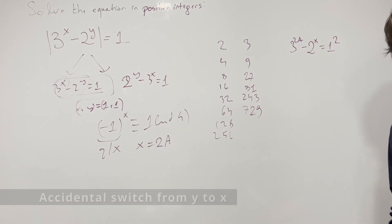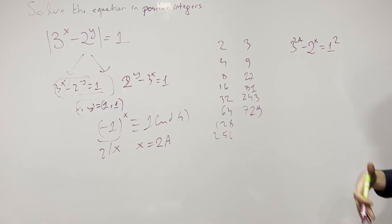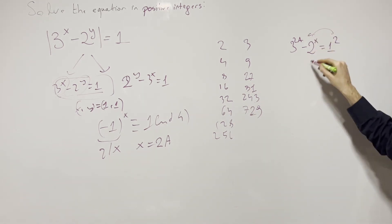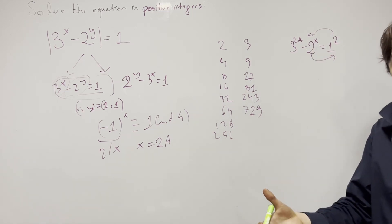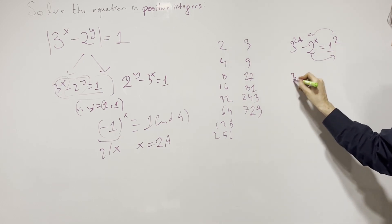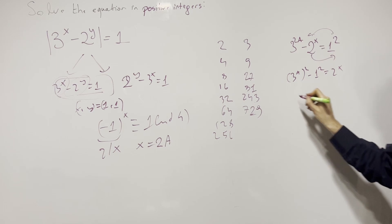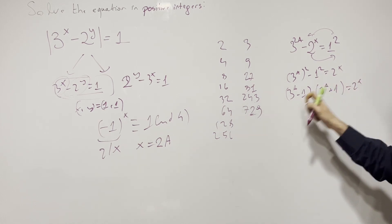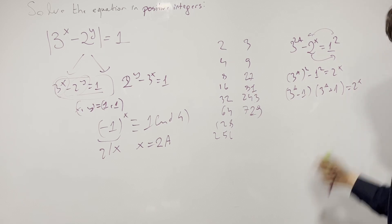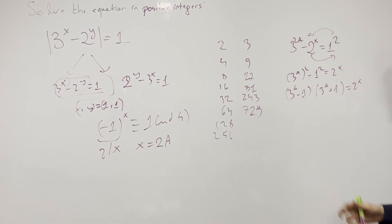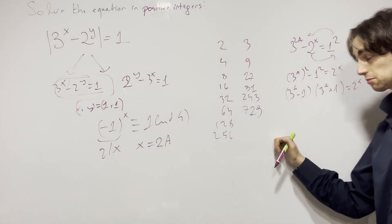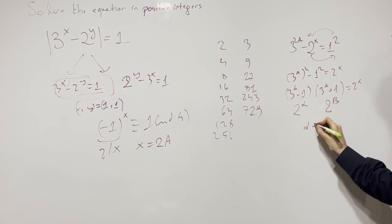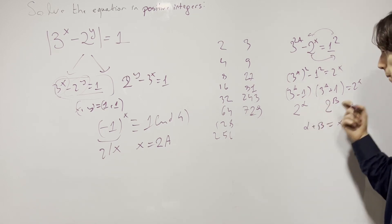Technique building! This is a difference of squares. That's the great thing about 1 — 1 is 1 squared. Whenever you need a power, 1 is the power that you need. So you take this here, and now it's the difference of squares: 3 to the 2a is (3 to the a) squared. So you have (3^a)^2 minus 1^2 equals 2 to the y.